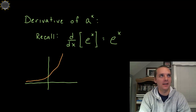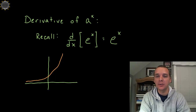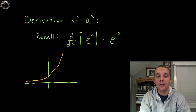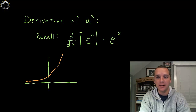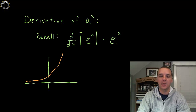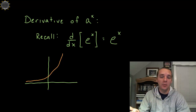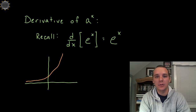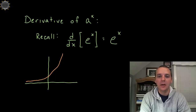The exponential function we spend probably 99% of our time talking about is e to the x. It occurs so often in nature, financial math, biology, chemistry, and all over the place that we spend very little time talking about any other exponential functions. However, when you have a 2 to the x, 10 to the x, or 7 to the x, we may need to know how to take its derivative. Unfortunately, it's not exactly the same as the derivative of e to the x — there's a slight modification that needs to be made.